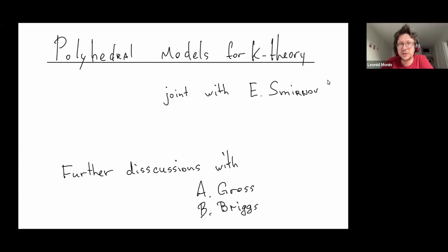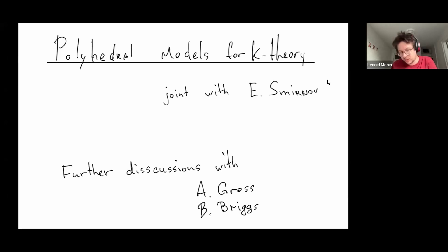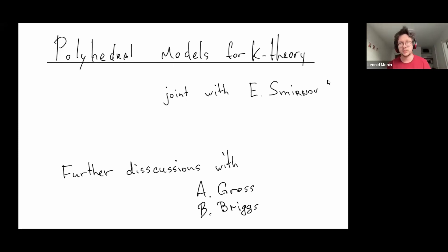Thank you very much for the invitation to this conference. I will talk about polyhedral models for K-theory of certain varieties. The most part of this talk will be based on my joint work with Evgeny Smirnov, but there are some further discussions with Andreas Gross and Ben Briggs, and maybe partly something I will say will come from these further discussions.